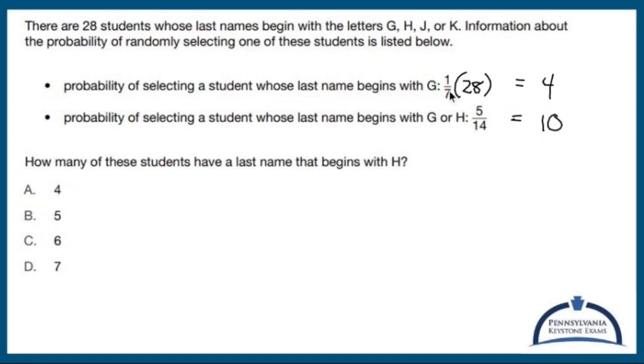How did I do that in my head without having to think fractions? Well, 14 is half of 28. So if you were to double 14, you'd have to double five too. So 10 have the last name of G or H.